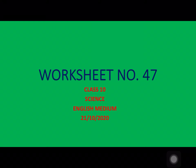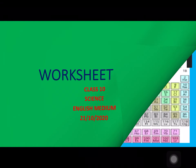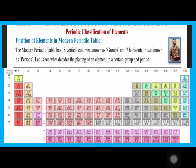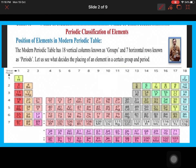Hello students, today we are going to discuss worksheet number 47, class 10 science English medium, for the date 21st October. In this worksheet we'll learn about the position of elements in the modern form of the periodic table. As per Henry Moseley, the periodic table has 18 vertical columns which are known as groups, and seven horizontal rows which are known as periods.